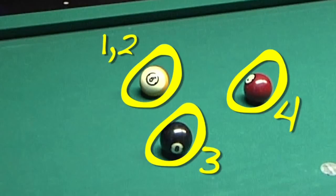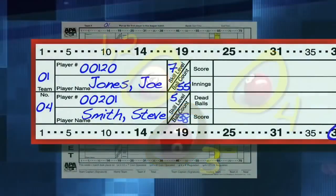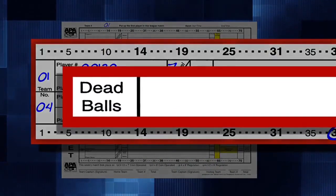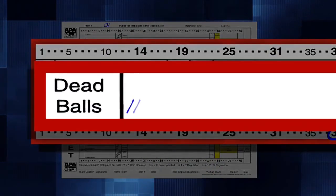Dead balls should be accounted for on the score sheet to avoid confusion. Draw a hash mark for each dead ball during the game, then total and circle the number at the end of the game to make it easier to keep a running total.